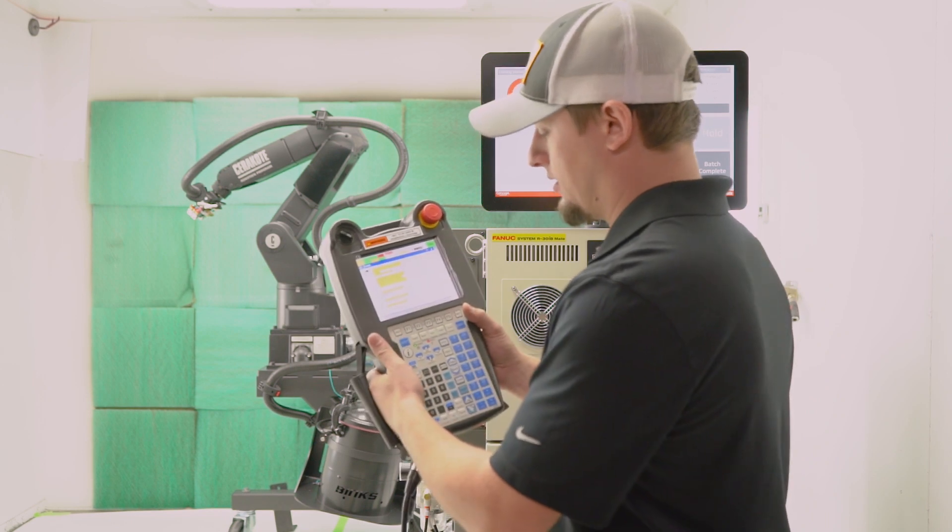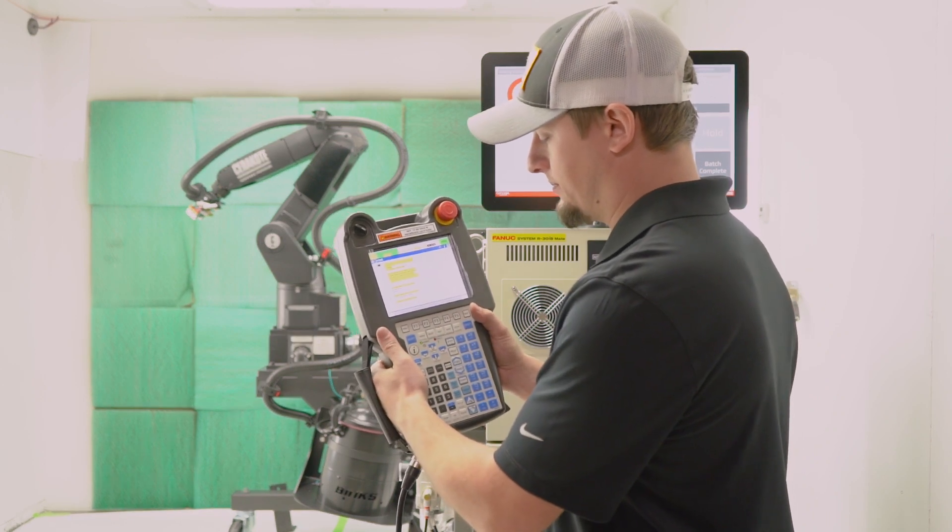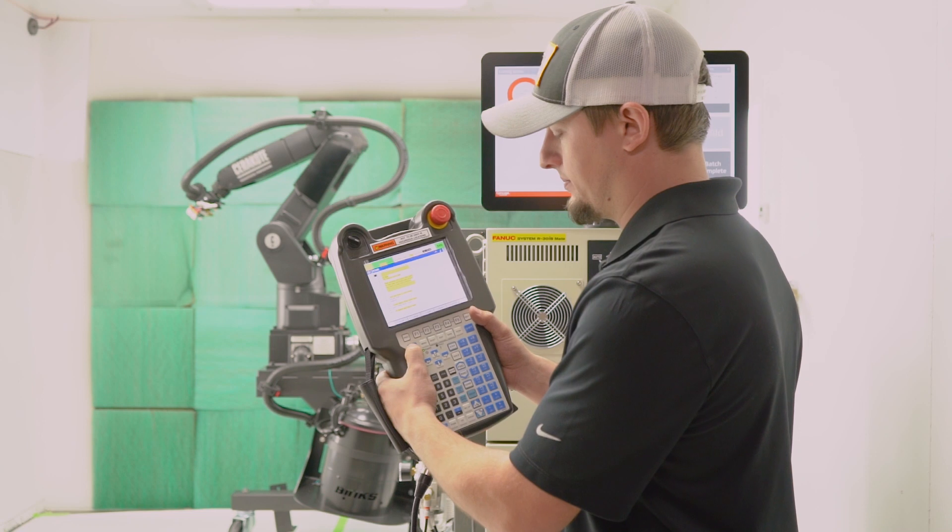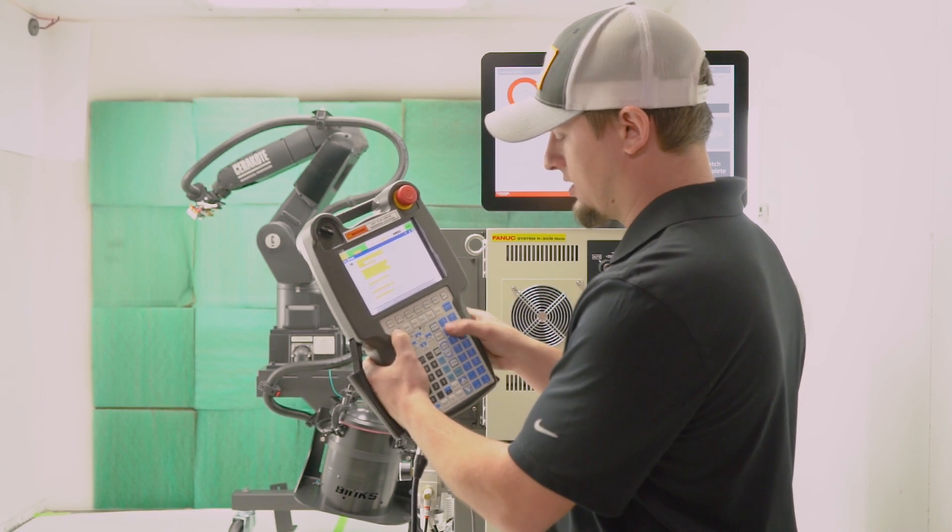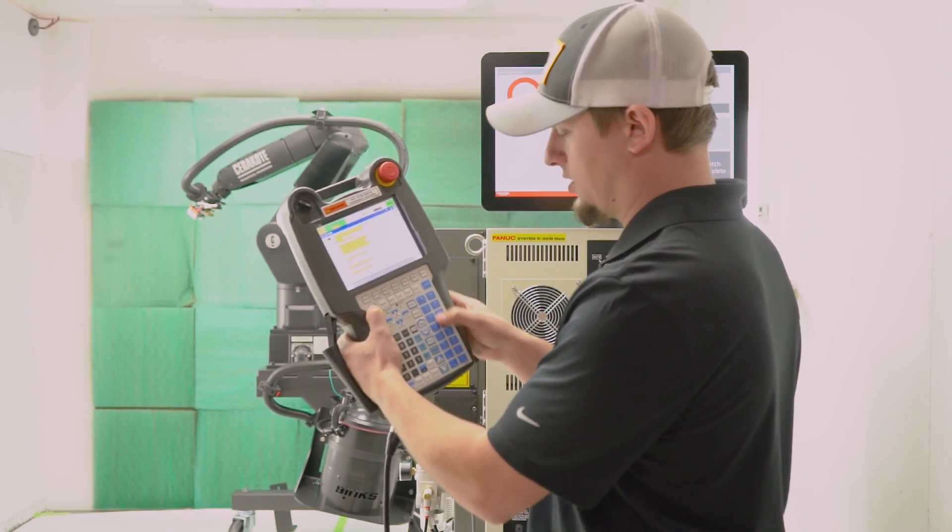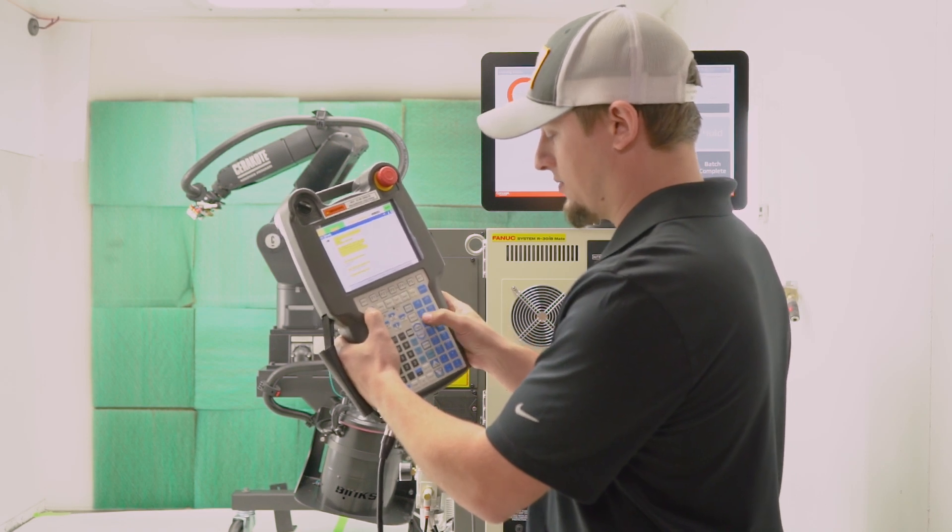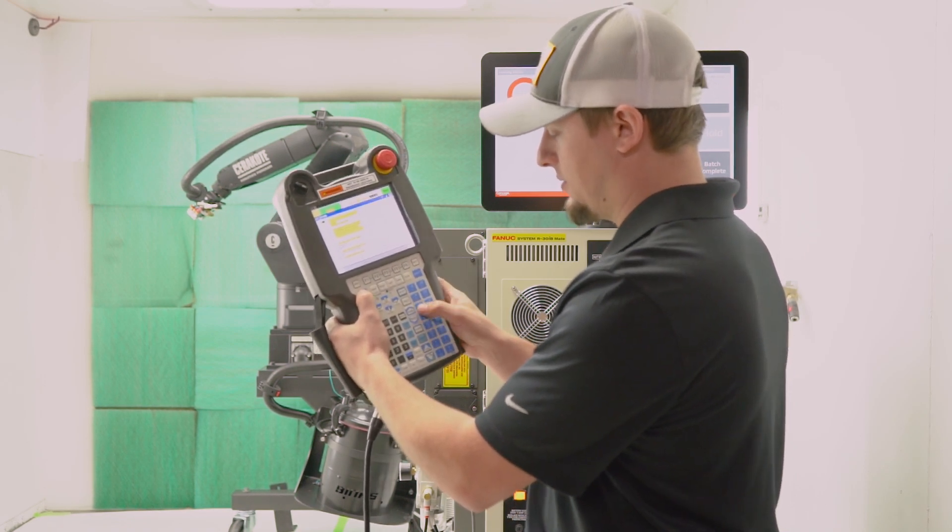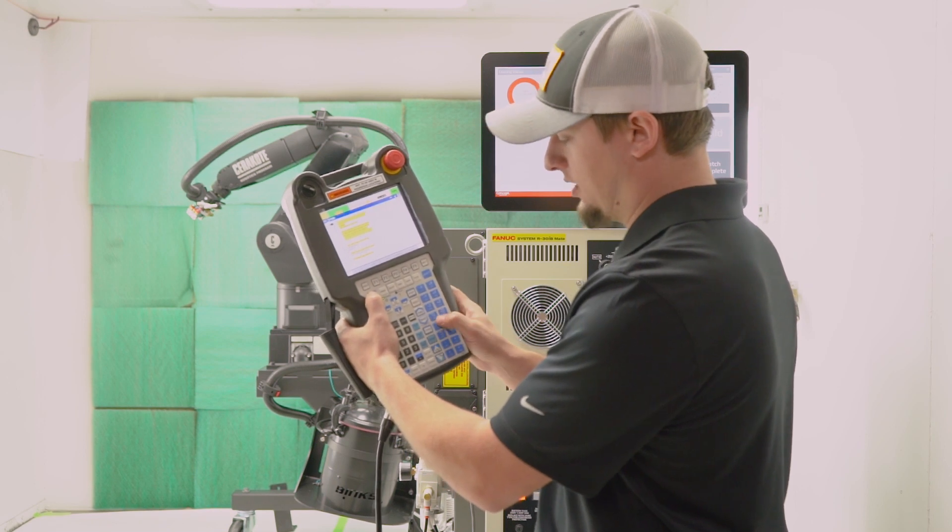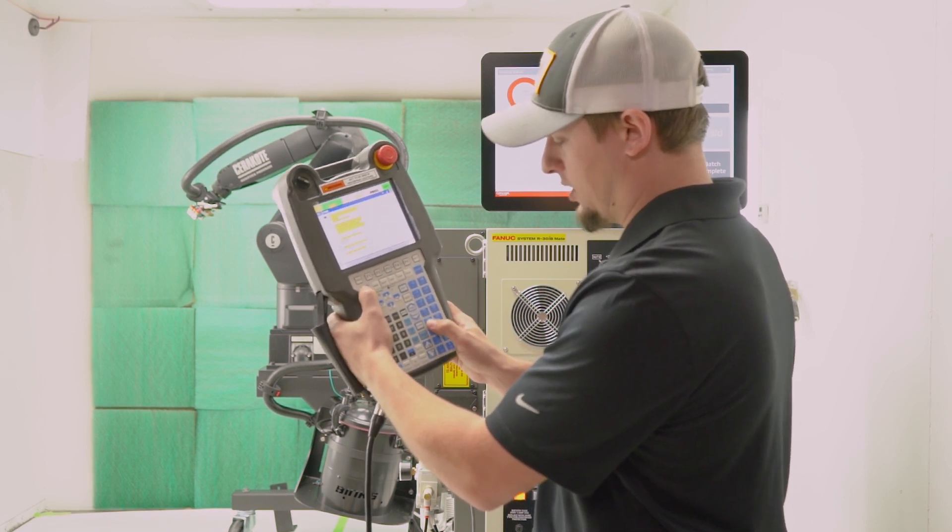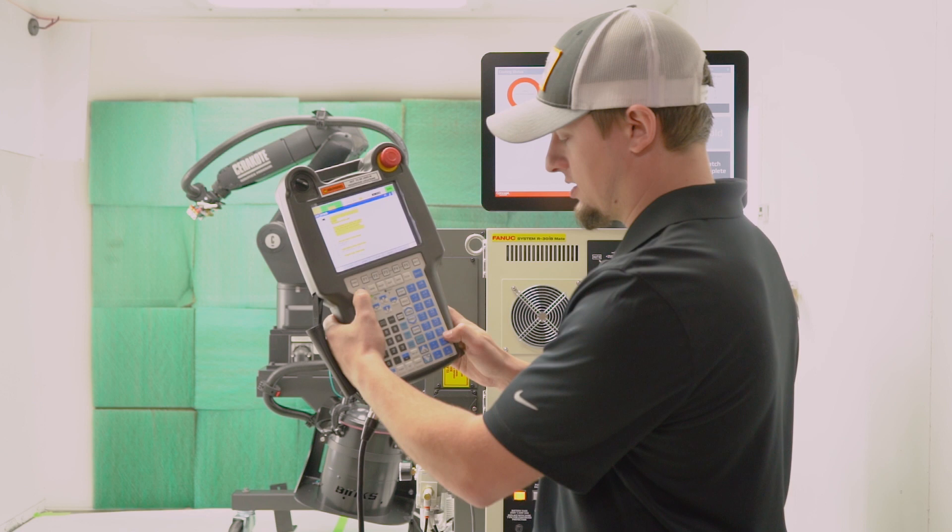Okay, so you're going to hold that dead man switch in, you're going to hold the shift key. While doing both of those things, then you can come over here to your coordinate groups. So you have J1 X positive and negative, J2 Y positive and negative, J3 Z positive and negative, J4 X positive and negative, J5 Y positive and negative, and J6 positive and negative.